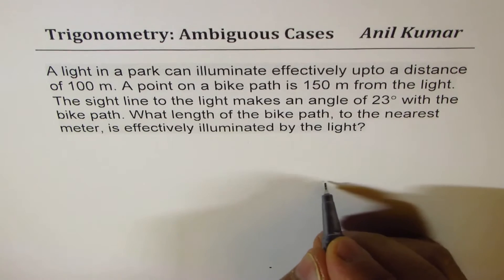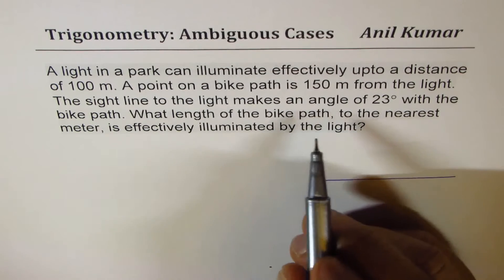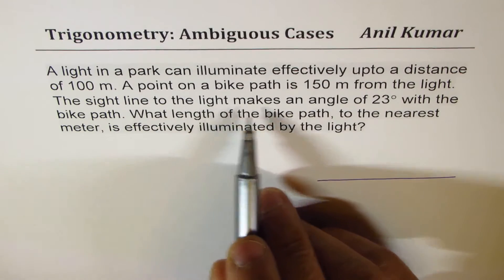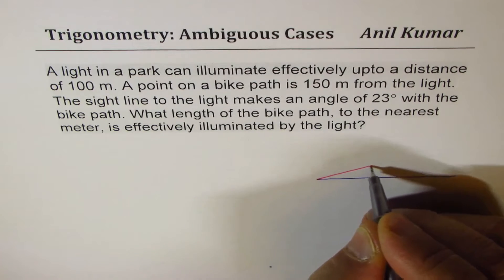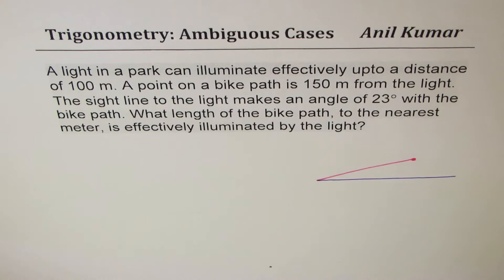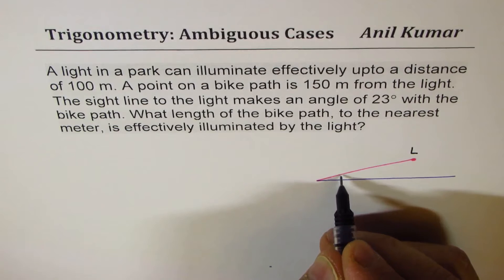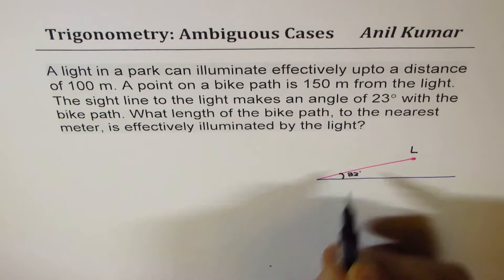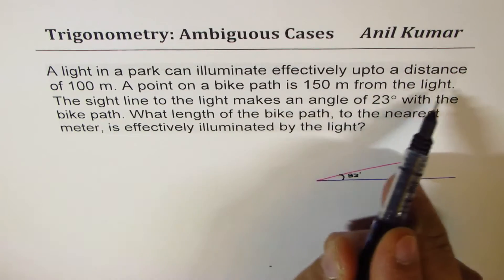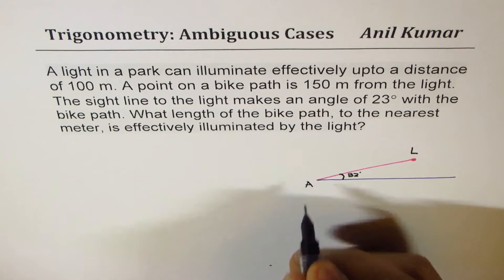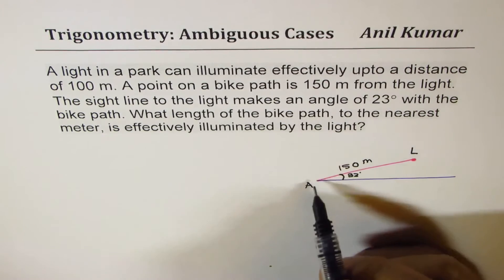So let's consider this to be the bike path. We are saying that the sight line to the light makes an angle — let's say somewhere here we have the light. So we have the light here, and this angle is 23 degrees. A point on the bike path is 150 meters from the light — let's call this point A. It is 150 meters from the light.